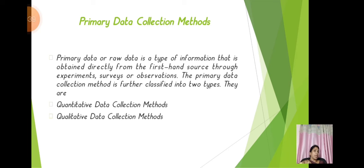Primary data collection is nothing but raw data — data which contains information obtained directly from first-hand sources through experiment, surveys, or observation. Primary data is further classified into two methods: quantitative data collection method and qualitative data collection method.